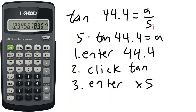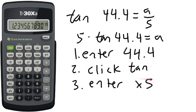Now for tan(44.4) × 5 equals a: first enter 44.4, then click the tan button to get tan(44.4), then click multiply and then 5. That should bring out our answer for a.